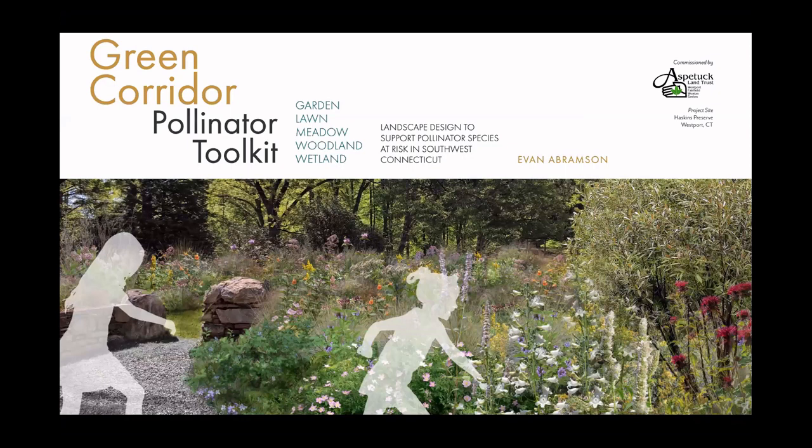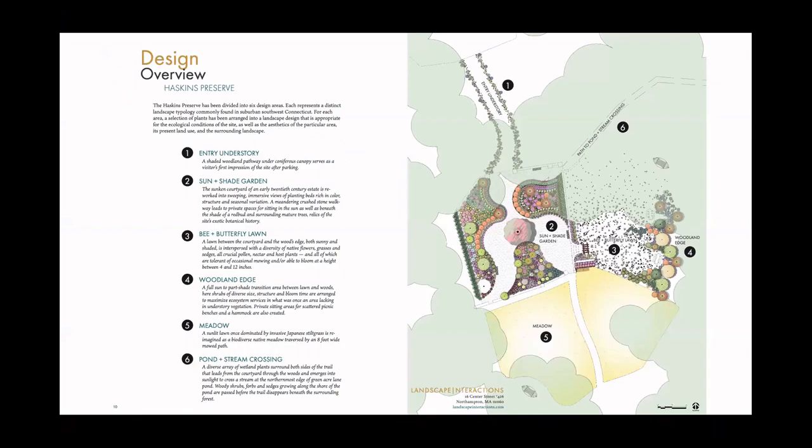This is another toolkit we did in southwest Connecticut in a more residential landscape in Westport, done in partnership with the Aspetuck Land Trust. The overview of the site was a large residential property which had turned into a public park, so we designed six design areas. Design area two was a highly formal garden in a former courtyard.